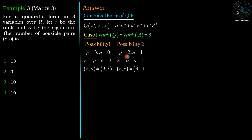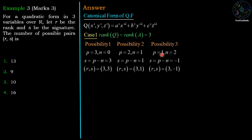Another possibility: p = 2 and n = 1, since R = p + n = 3. That means two positive terms and one negative term. Then signature S = p − n = 2 − 1 = 1, giving the pair (3, 1). Third possibility: p = 1 and n = 2 — one positive term and two negative terms. Signature S = 1 − 2 = −1, giving the pair (3, −1).